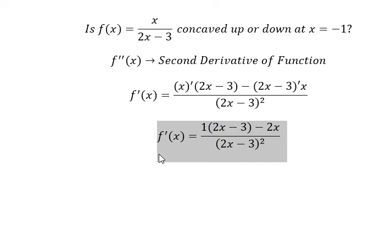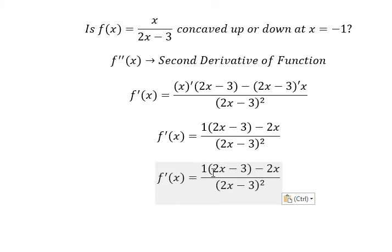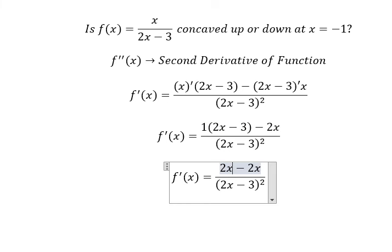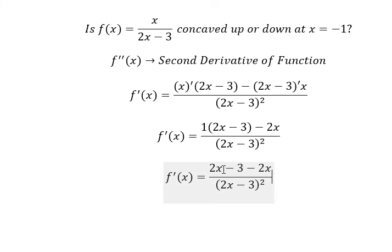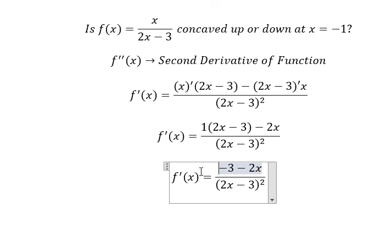We need to simplify. You get (2s minus 3), the 2s terms cancel, and you get negative 3.